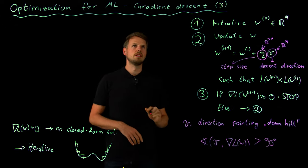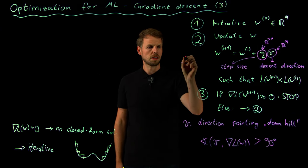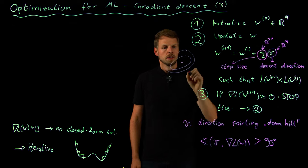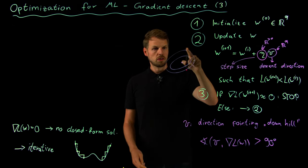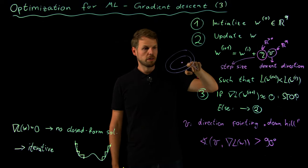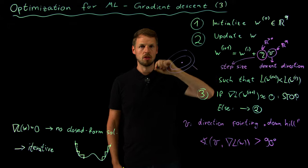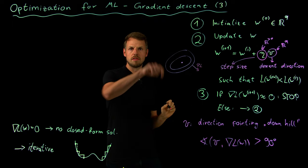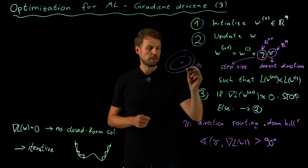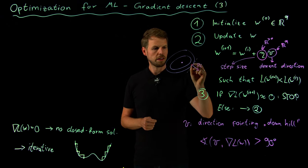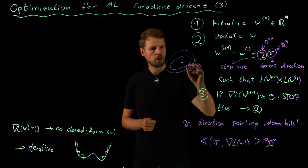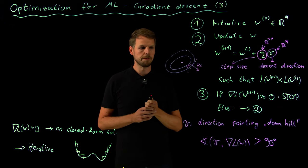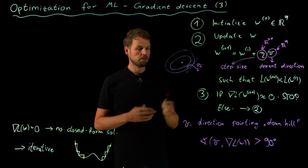Consider a 2D parameter space with level sets — concentric circles where the loss function has the same value along each ring, with the lowest value at the center. The gradient of the loss function is orthogonal to these level sets and points in the direction of steepest ascent.